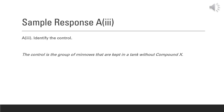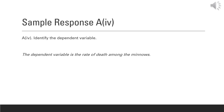Sample response A3 asks us to identify our control. In this case, the control is the group of minnows kept in the tank without compound X — we are keeping conditions as close to normal as possible, and the normal condition for the minnows is an environment without compound X. Sample response A4 requires us to identify our dependent variable. The independent variable is the presence or absence of compound X. The dependent variable is the rate of death among the minnows, measured across all four tanks.